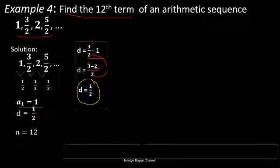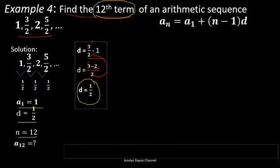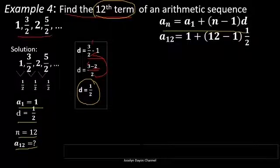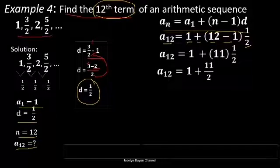The first term is 1. The common difference is 1 half, and n equals 12 because we are tasked to find the 12th term. Write the general formula, then substitute: a sub 12 equals 1 plus the quantity of 12 minus 1 times 1 half. Simplify: copy 1, then 12 minus 1 equals 11, times 1 half.